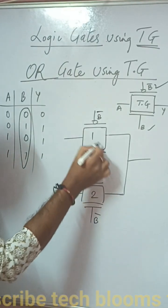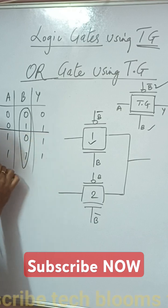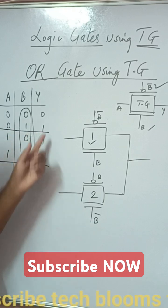Now here what is happening when this transmission gate will be activated only when B is equal to 1. So there are two combinations when B is equal to 1 and what is the output? Output is 1.